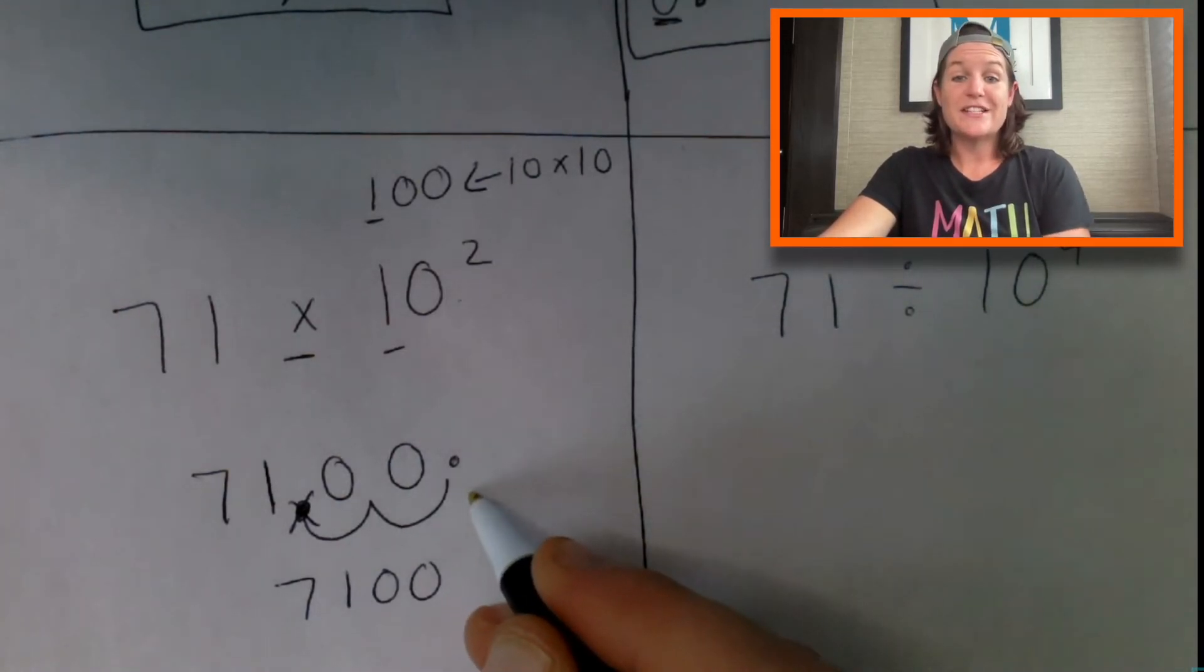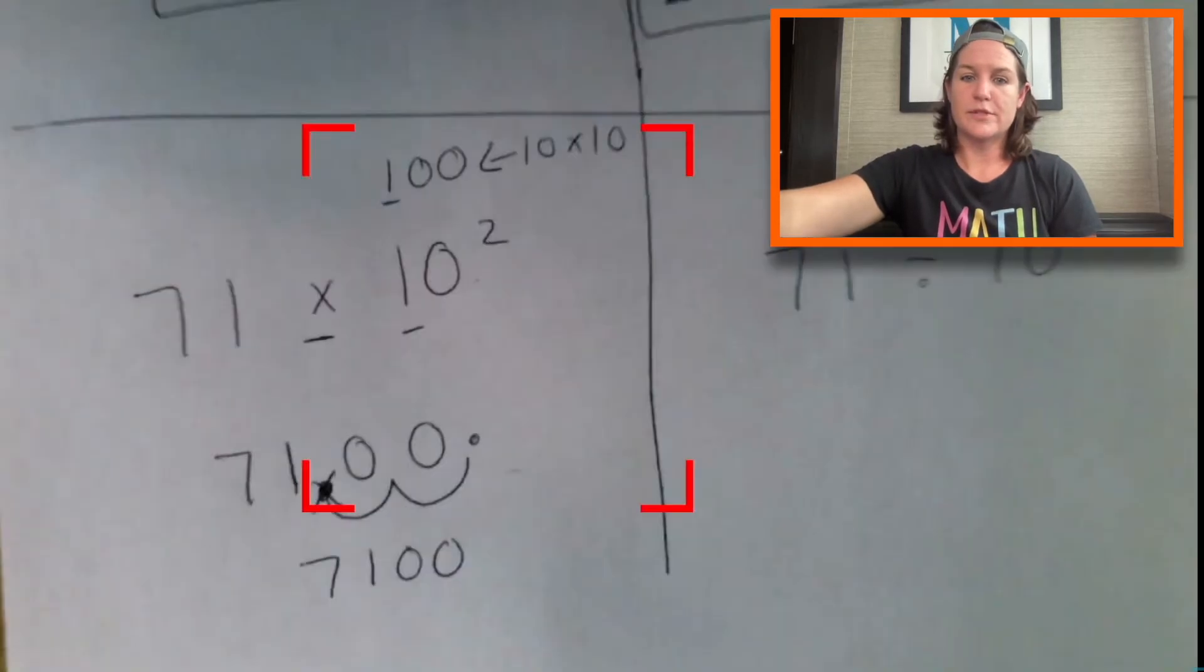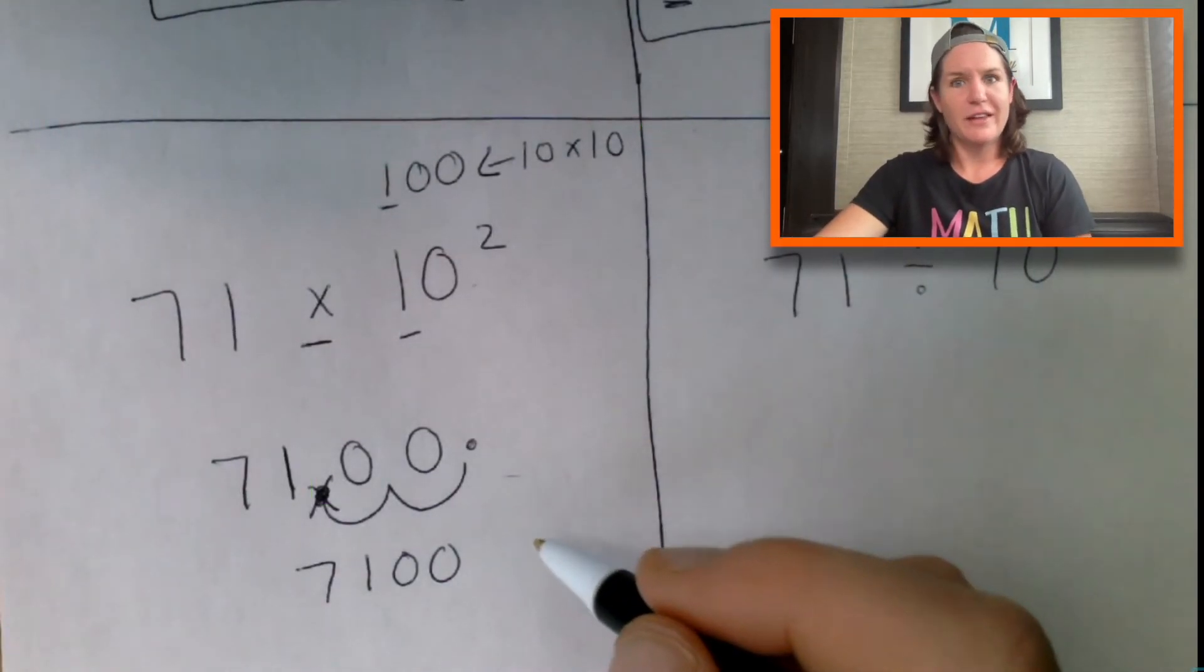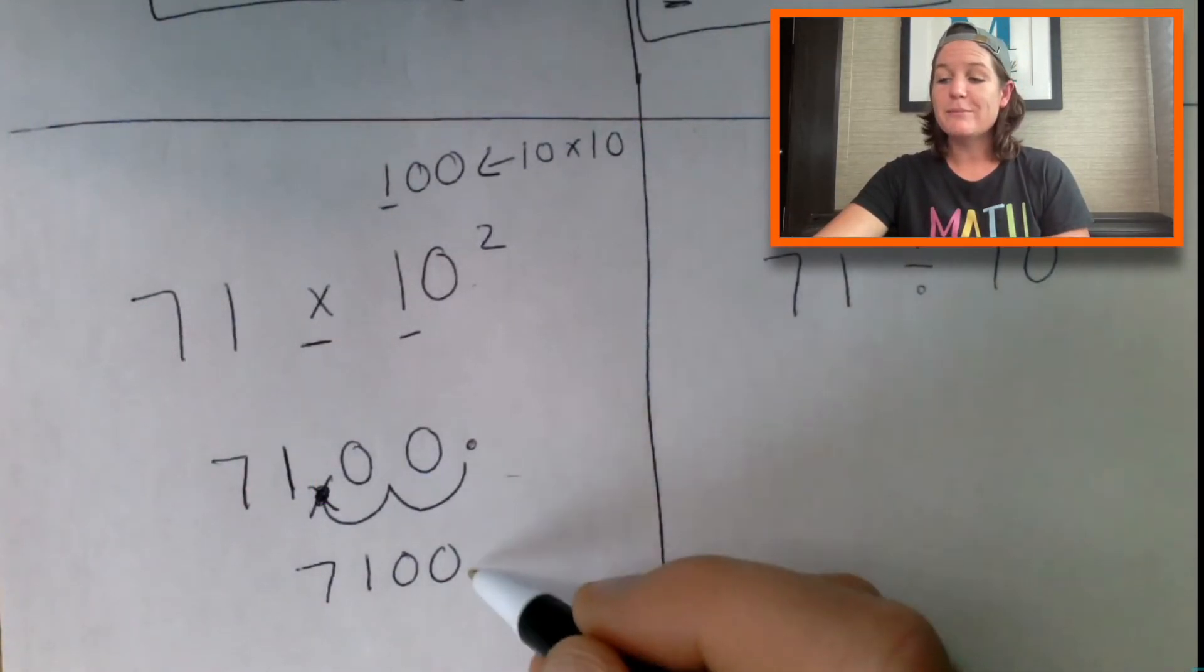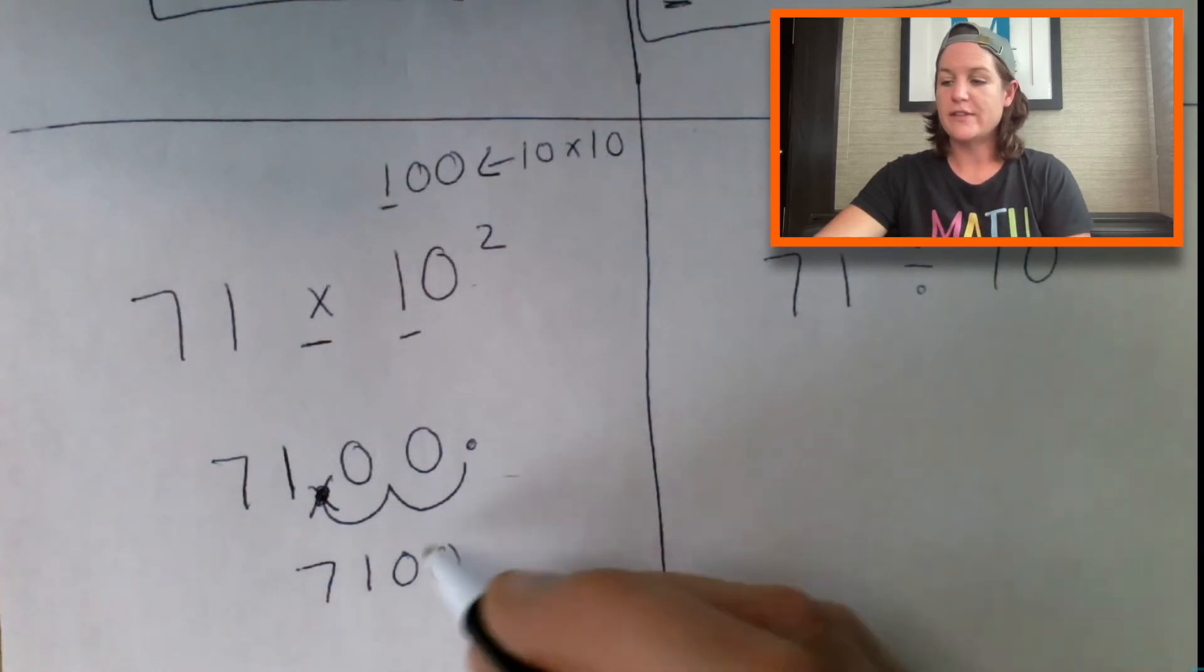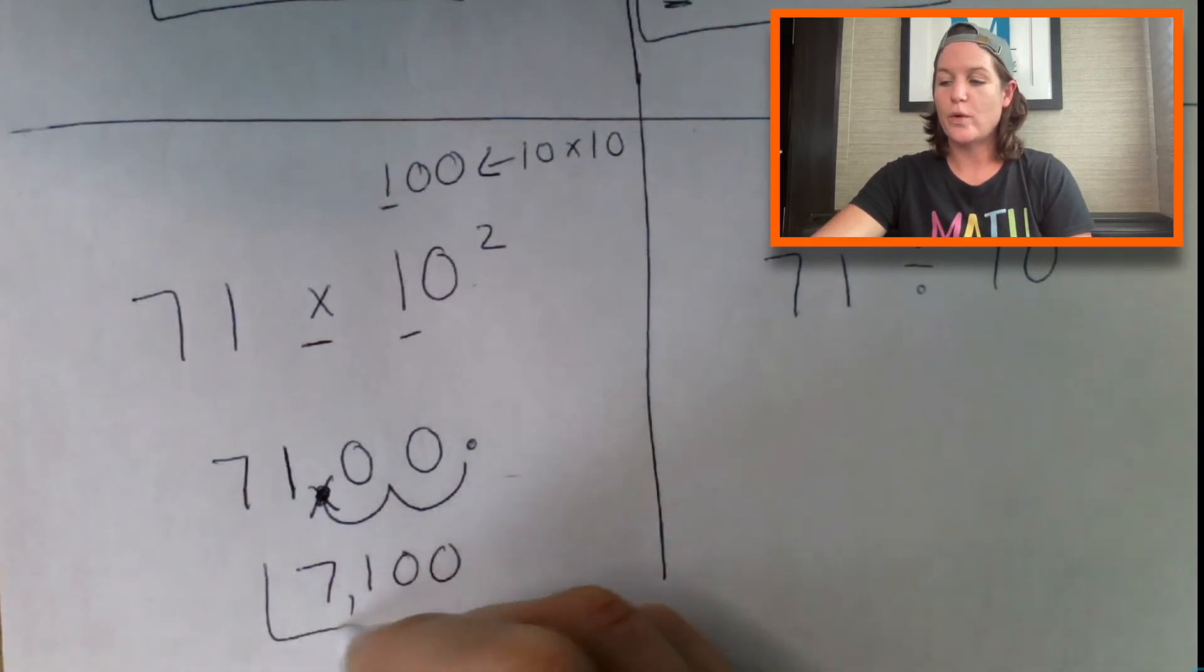Let's shift it to the right two jumps: one, two. Put zeros there. Out with the old one, in with the new, and rewrite it. Because there is nothing behind the decimal, we just leave it like that. So it'd be 7,100.